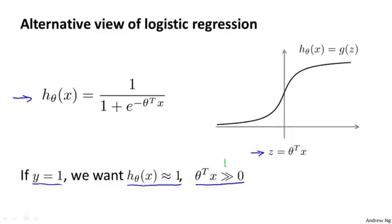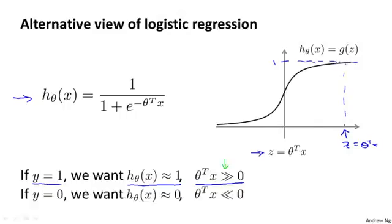That's because when z, which is theta transpose x, is much bigger than 0 — far to the right of the sigmoid figure — the output of logistic regression becomes close to 1. Conversely, if we have an example where y equals 0, then we're hoping the hypothesis will output a value close to 0, and that corresponds to theta transpose x, or z, being much less than 0.